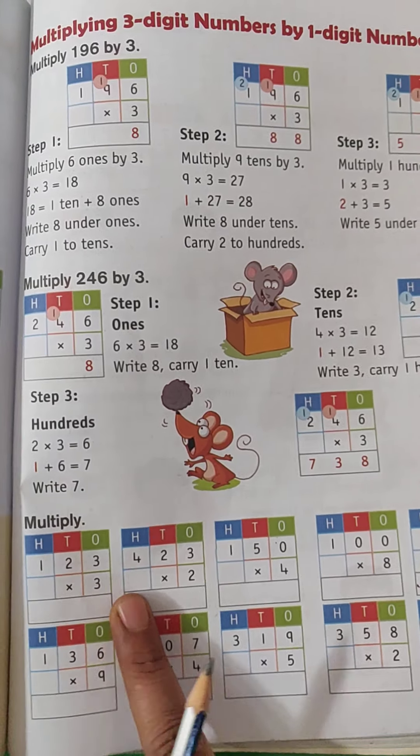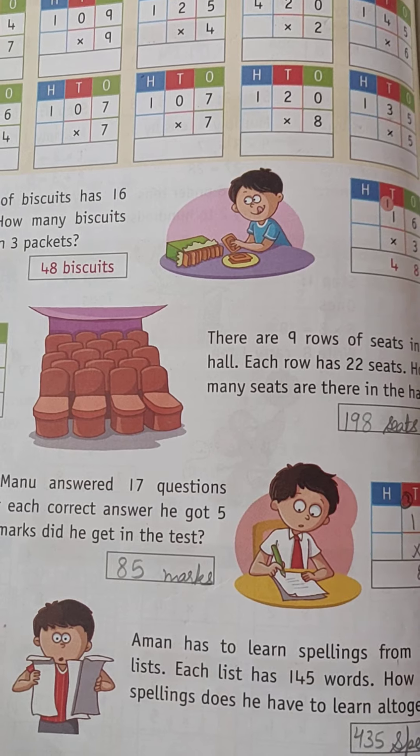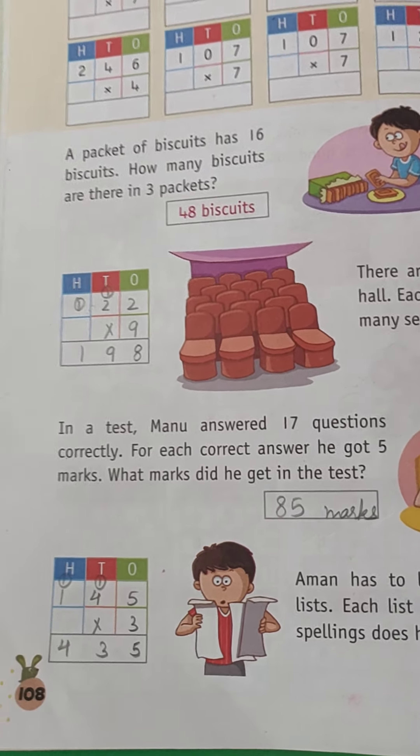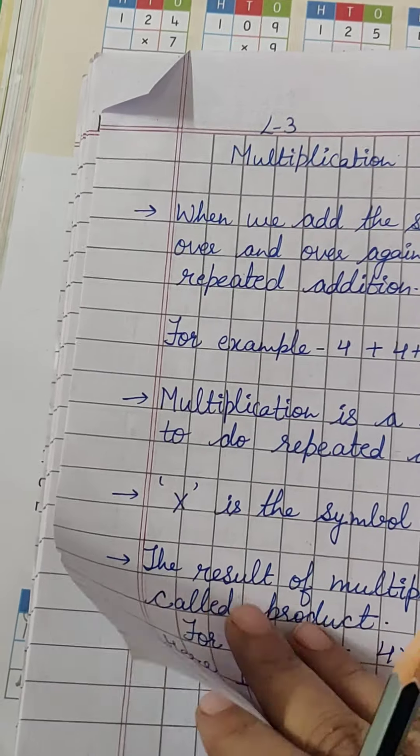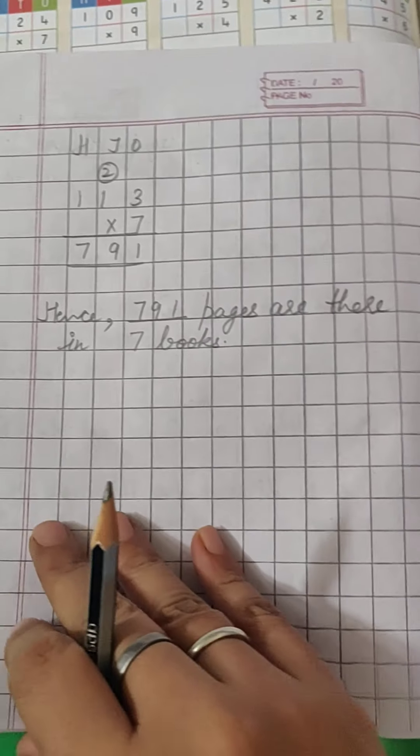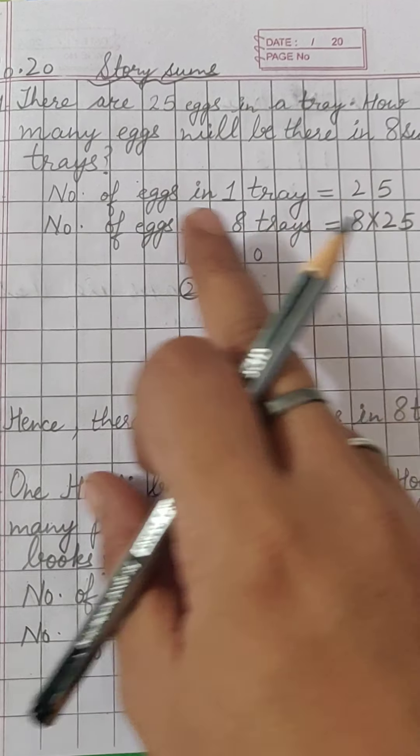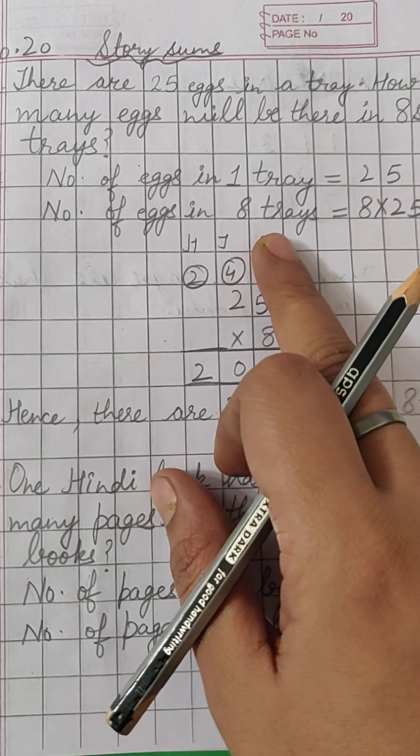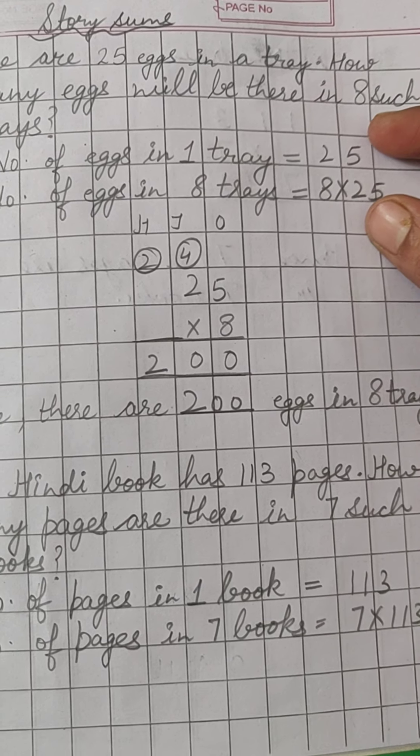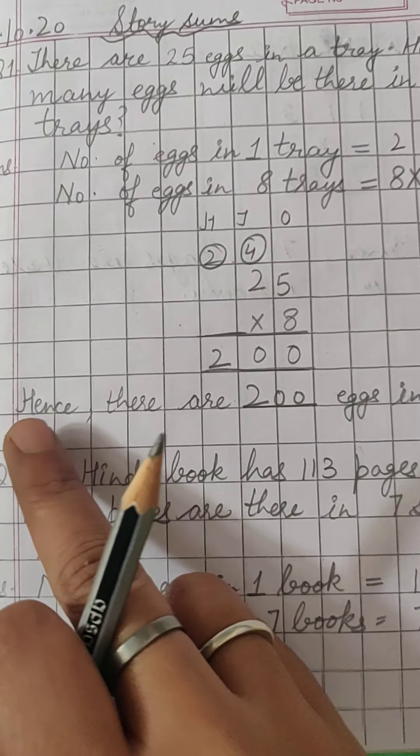Then are your three-digit multiplication. Then again we have your story sums - I am taking the story sums again and again, children. I am giving you this practice work of story sums, so you have to make sure that whenever you are doing the story sums, you have to be very specific that whether you are writing the statement in this form only. You cannot write 'eggs in one tray, eggs in eight trays' - no. You have to write it here, and then you have to do the multiplication down there. And 'hence' is very important, okay.